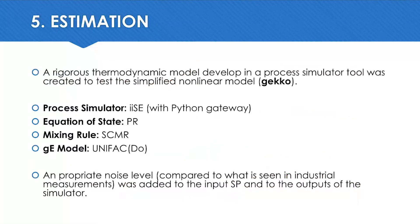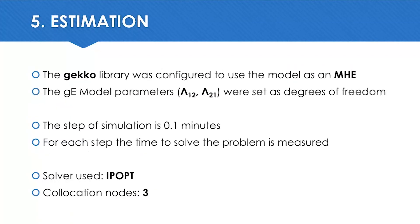Now in the estimation part, I created a thermodynamic rigorous model in a process simulator tool to test the simplified nonlinear model. I used the Aspen process simulator with the Peng-Robinson equation of state, PSMR mixing rule, and UNIFAC Dortmund as the excess Gibbs model. I also included this time an appropriate noise level to the inputs and to the outputs of the simulator. This time Gekko was configured as a moving horizon estimator, and I let the estimator change the parameters of the excess Gibbs model. The simulator is also configured the same as before, so we measure the time to solve the problem for each step.